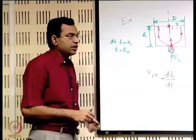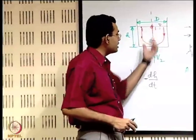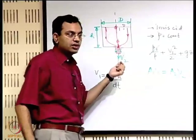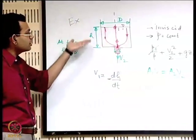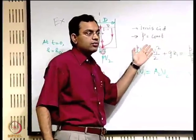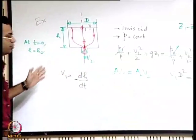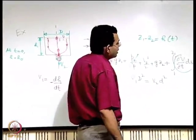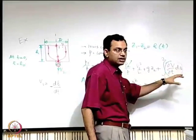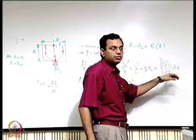We continue with the example from the last lecture: there is a tank, water is being drained out through the bottom, and the height of water in the tank is changing with time. Our objective is to find out how the height changes with time. We were discussing the significance or impact of the unsteady term that should or should not be retained in the Bernoulli's equation.